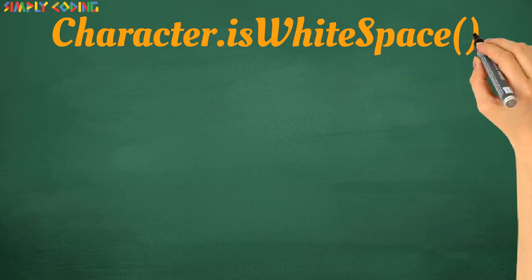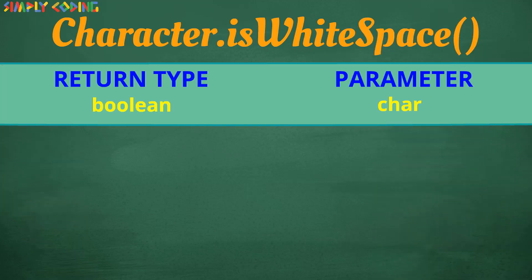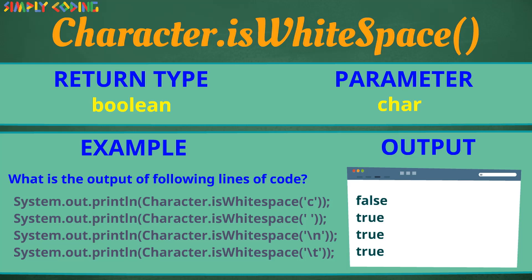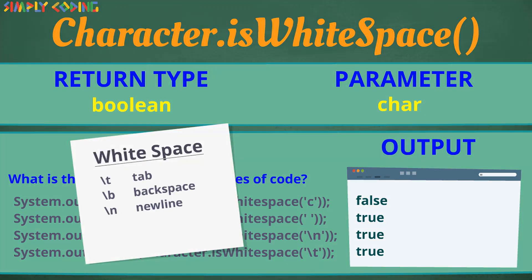Next is isWhitespace. It returns true if ch is whitespace. Important point to note here is whitespace is not just space character. It also includes some of the escape sequences we saw earlier like tab, line feed, form feed, carriage return etc. So you see in the question below along with space slash n and slash t also returned true.